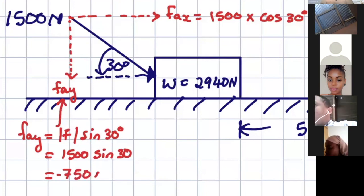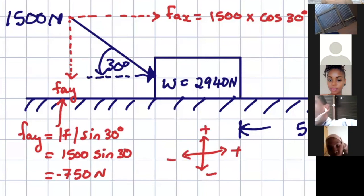And we know that this one will also then be 750. This time, you can notice that it is in the negative direction, because we're choosing down as negative, and then this way as positive, up as positive, left as negative.